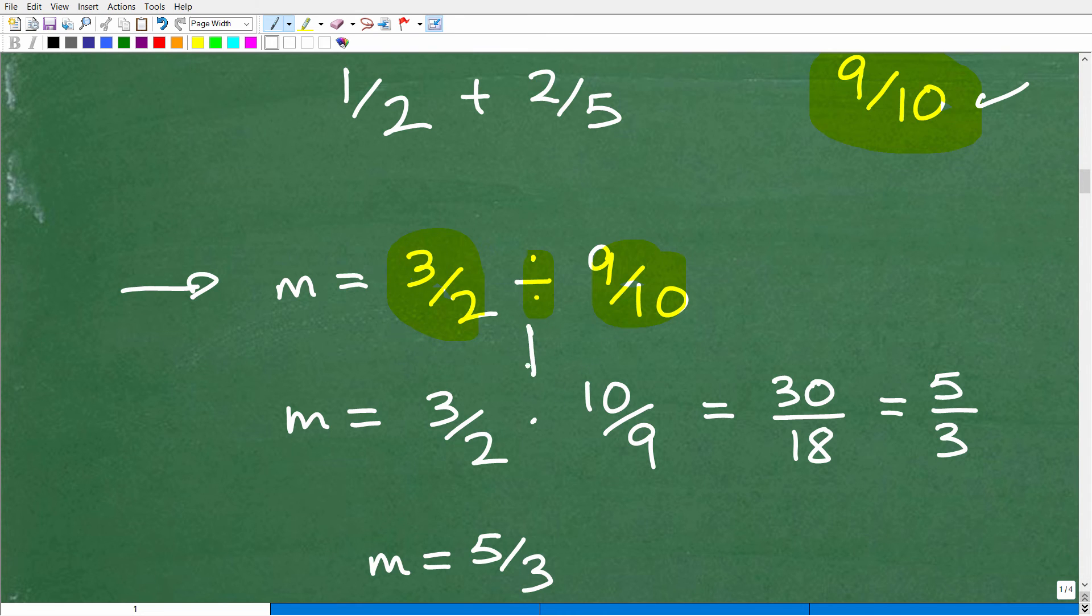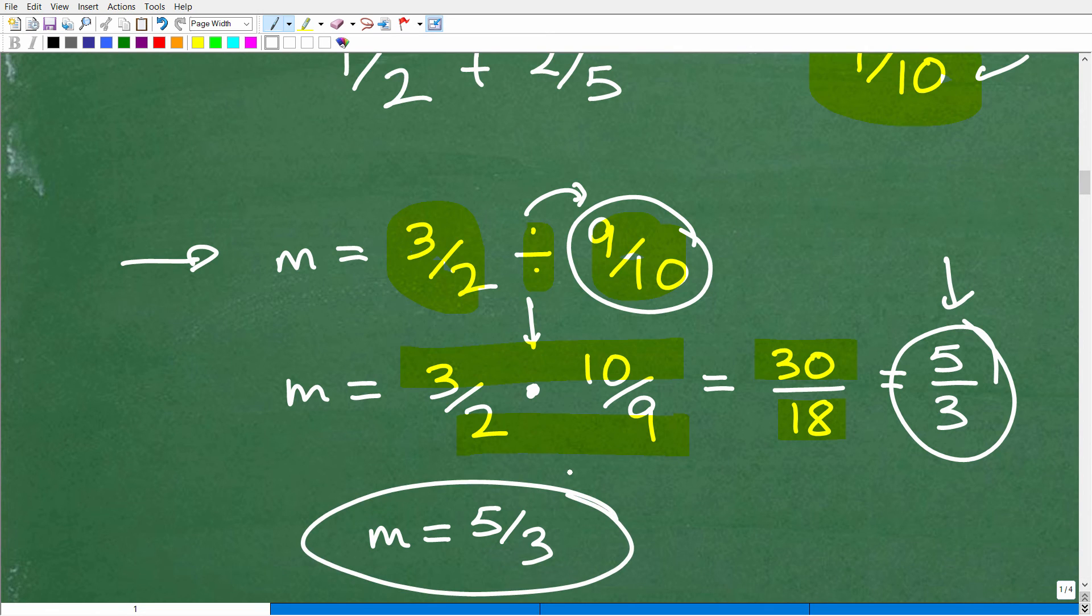And then now we need to go ahead and deal with this division of fractions. So remember, when we divide fractions, we turn that division operator into multiplication. And we need to flip this fraction to the right of that division operator. So 9 tenths becomes 10 over 9. And then when we multiply fractions, we simply multiply the respective numerators and denominators. So 3 times 10 is 30. 2 times 9 is 18. And when I simplify and reduce that fraction, I get 5 thirds. That is the answer.